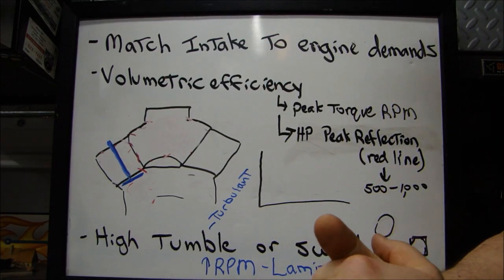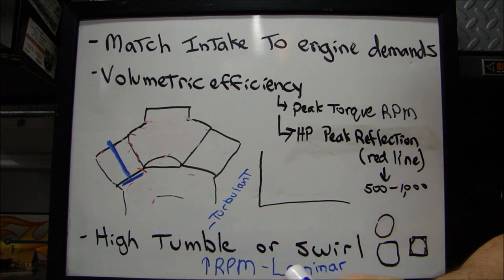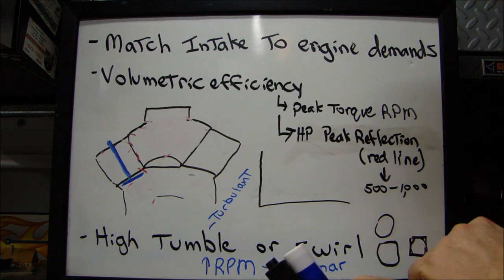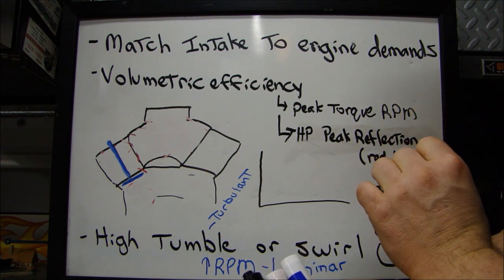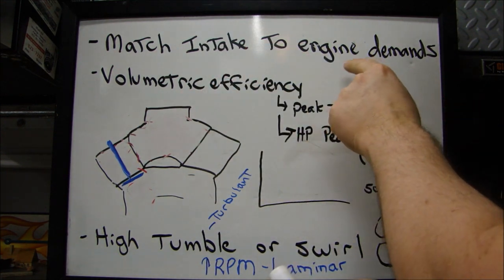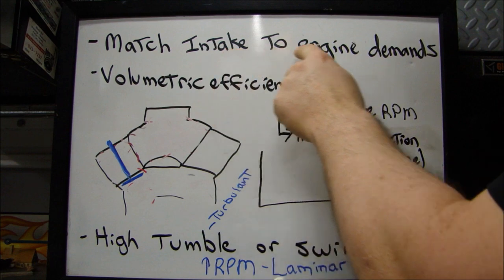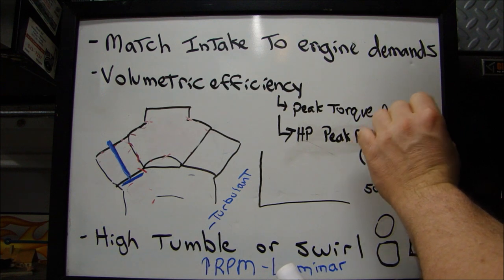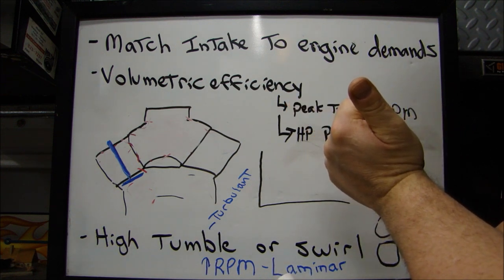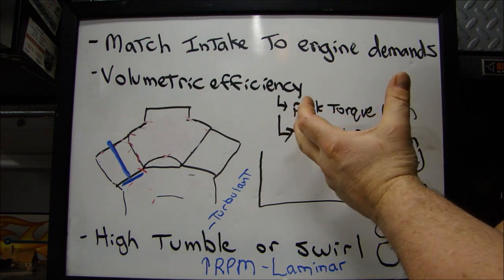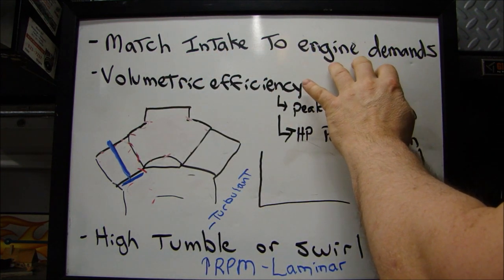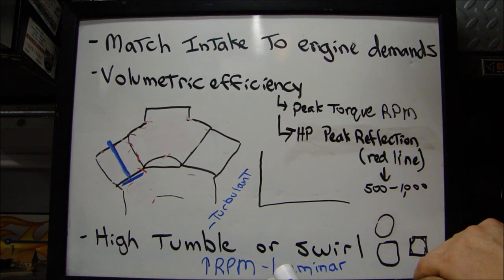I'm going to talk about the basics of intake manifold design and make it short and sweet. The basic concept of intake manifold design is matching the intake manifold to the demands of the engine — engine demands. So you're trying to match the intake to the engine demands. If you've been following this series, you know what volume or flow your heads have, how many cubic inches your engine is, and how much volume is going to be required to feed that engine. You already understand the engine demands from the previous videos. Now we're trying to match an intake to meet those demands.